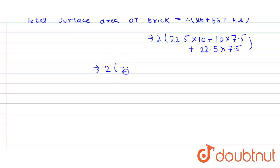Which gives us 2 × 468.75 = 937.5 cm square.